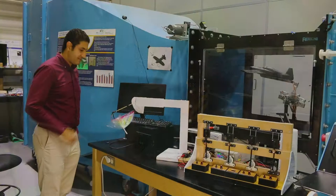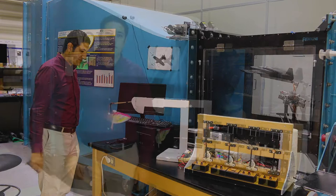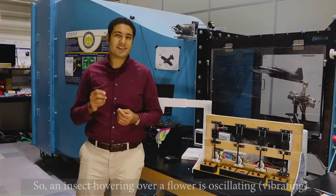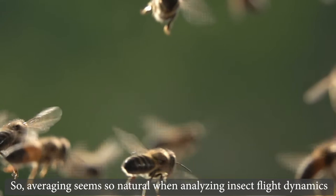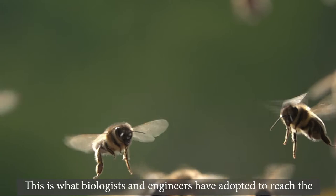Professor Haytham Taha, the lead investigator of the lab, had another view. The issue is insects have essentially time-varying dynamics. So an insect hovering over a flower is oscillating, vibrating in all directions. On the average, it's hovering over the flower. So averaging seems so natural when analyzing insect flight dynamics. This is what biologists and engineers have adopted to reach the common conclusion of instability.